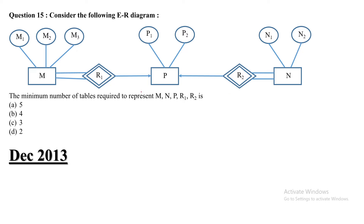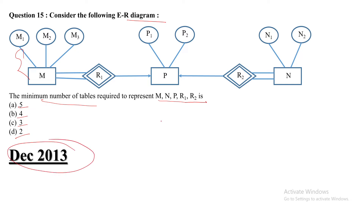This is question number 15. Consider the following ER diagram. The minimum number of tables required to represent M, N, P, R1, R2 is: option A — 5, option B — 4, option C — 3, option D — 2. This question was asked in 2013.